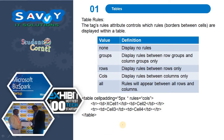Table rules. The rules attribute controls which rule borders between cells are displayed within a table. Options are: none — display no rules; groups — display rules between row groups and column groups only; rows — display rules between rows only; columns — display rules between columns only; all — rules will appear between all rows and columns.